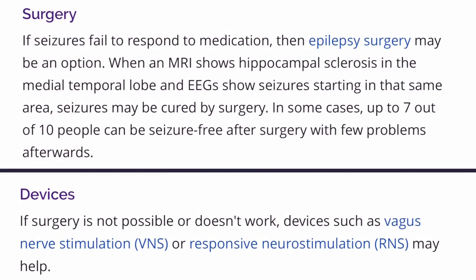The second step, if anti-epileptic drugs fail to cure the seizures, is that epilepsy surgery may be an option. Especially when an MRI shows hippocampal sclerosis in the medial temporal lobe and the EEG also confirms it by showing seizures in that same area, the seizures may well be cured by surgery. In some cases, up to 7 out of 10 people can be seizure-free after surgery. It's really important to get both the EEG and the MRI to confirm that surgery could help.